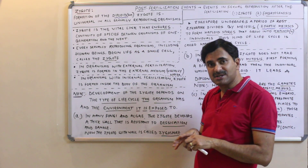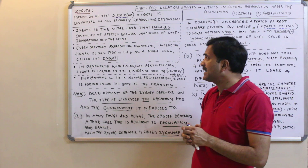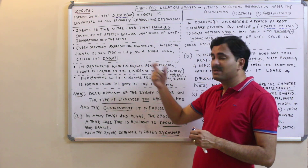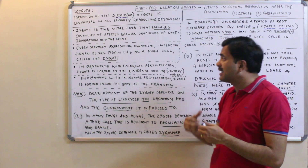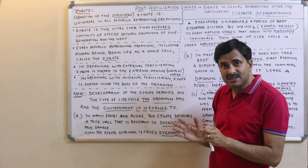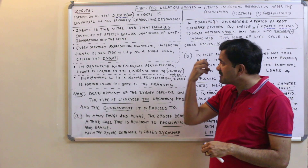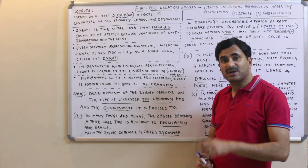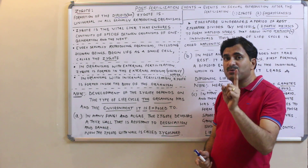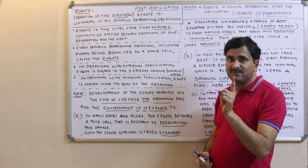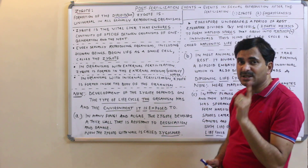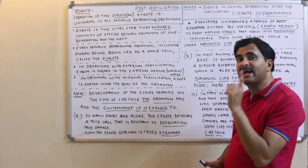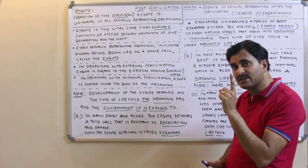Every sexually reproducing organism, including human beings — the most advanced creatures on this planet — begins life as a single cell called the zygote. Remember: the zygote is treated as unicellular, while the embryo formed from it is treated as multicellular. So the zygote is always a single cell.